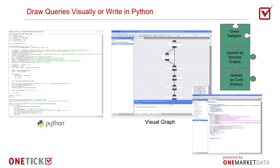You can swap between the visual graph, which we can see on the right-hand side, or Python code, which we can see on the left, depending on which development approach you're most comfortable with.